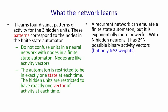So a recurrent neural network can emulate a finite state automaton, but it's exponentially more powerful in its representation. With n hidden neurons, it has two to the n possible binary activity vectors. Of course, it only has n squared weights, so it can't necessarily make full use of all that representational power. But if the bottleneck is in the representation, a recurrent neural network can do much better than a finite state automaton.